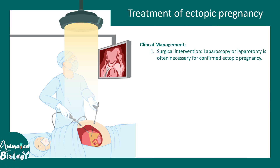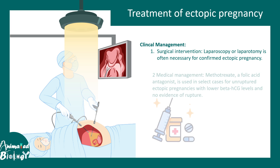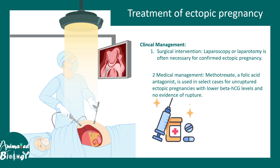In most cases surgical intervention is required, especially when the fallopian tube is ruptured. Laparoscopy and laparotomy are used to manage the condition. In cases of open rupture, open surgery may be required. However, if the tube has not ruptured, methotrexate, a folic acid antagonist, can be used to block the progression of the ectopic pregnancy.